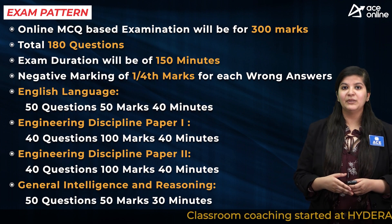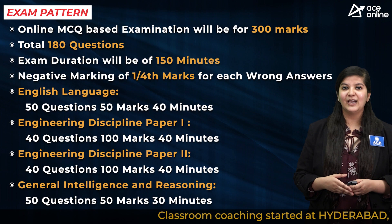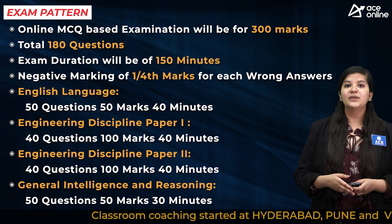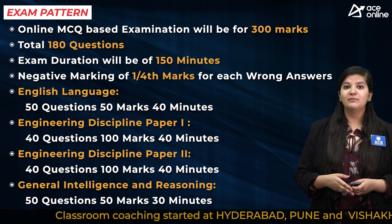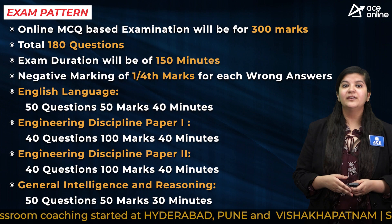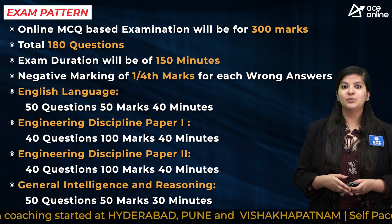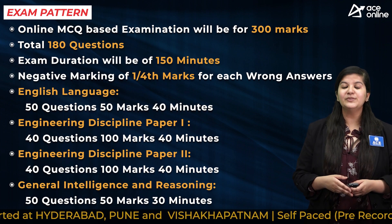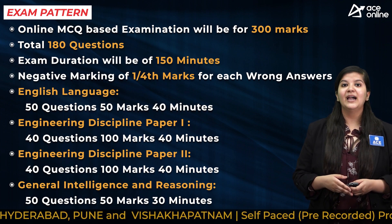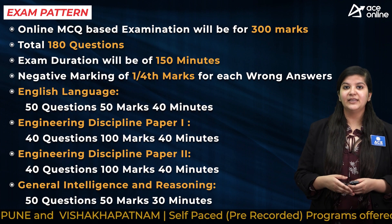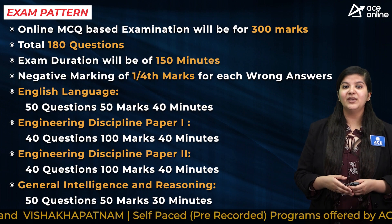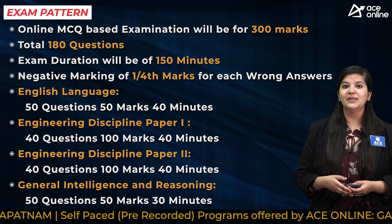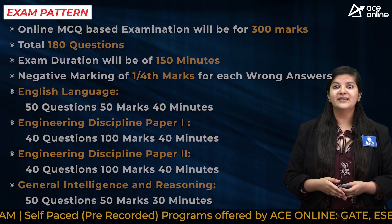Candidates need to attempt 50 questions of 50 marks in 40 minutes for English language. For discipline knowledge paper one and paper two separately, it is 40 questions of 100 marks in 40 minutes each. For reasoning ability, candidates need to attempt 50 questions of 50 marks in 30 minutes.